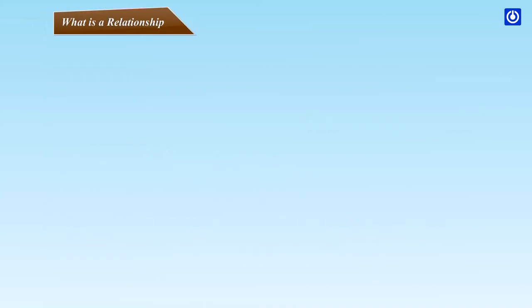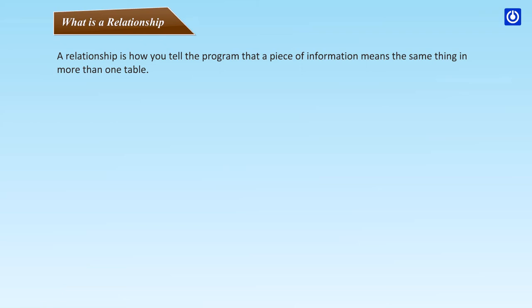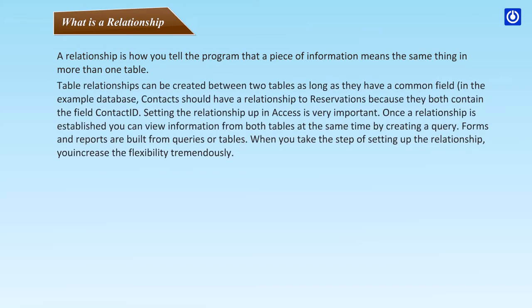What is a Relationship? A relationship tells the program that a piece of information means the same thing in more than one table. Table relationships can be created between two tables as long as they have a common field. For example, contacts should have a relationship to reservations because they both contain the field Contact ID. Once a relationship is established, you can view information from both tables at the same time by creating a query. Forms and reports are built from queries or tables, and setting up relationships increases flexibility tremendously.